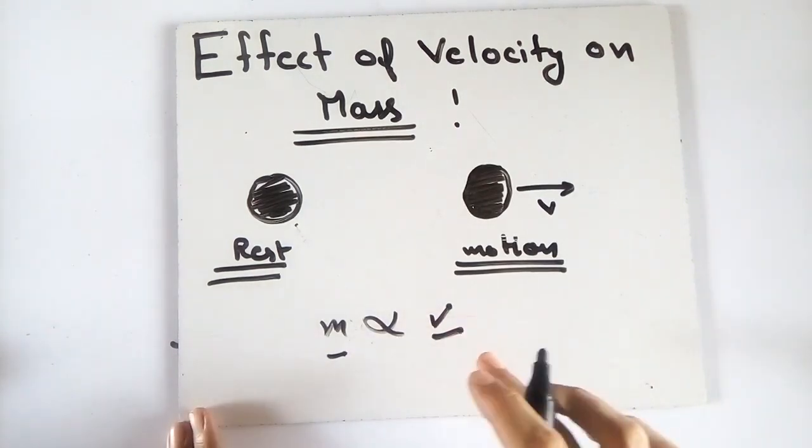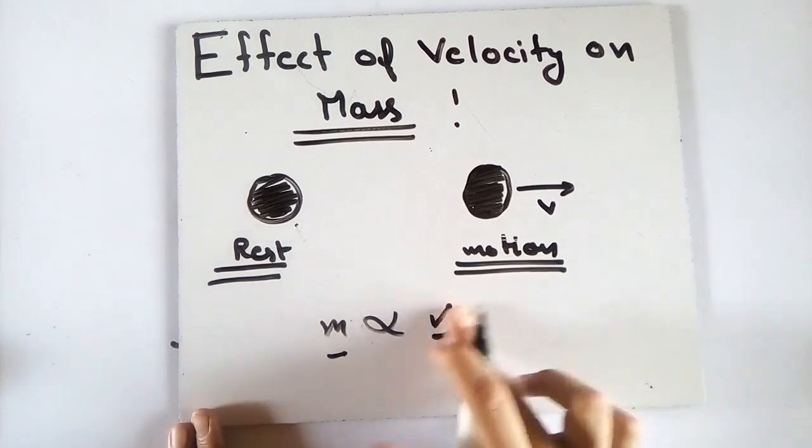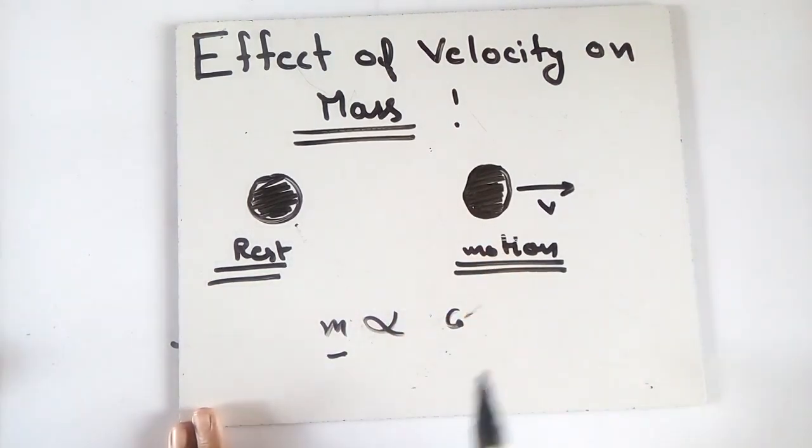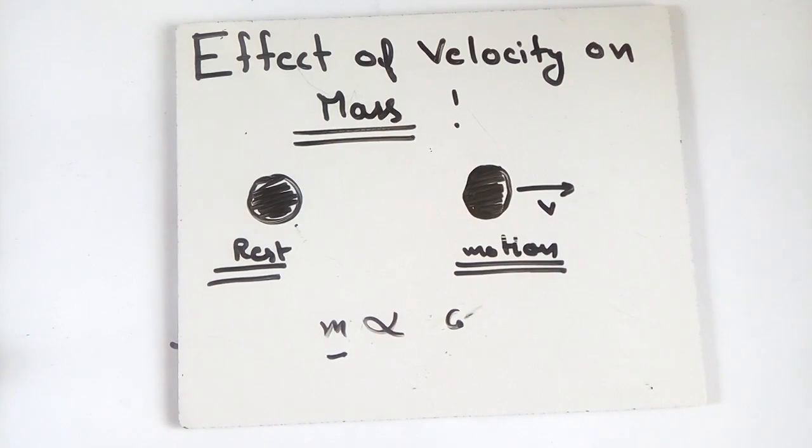But if the velocity is close to c, then we can't say that mass is a constant quantity. So thanks for watching this video and always remember that math is everything.